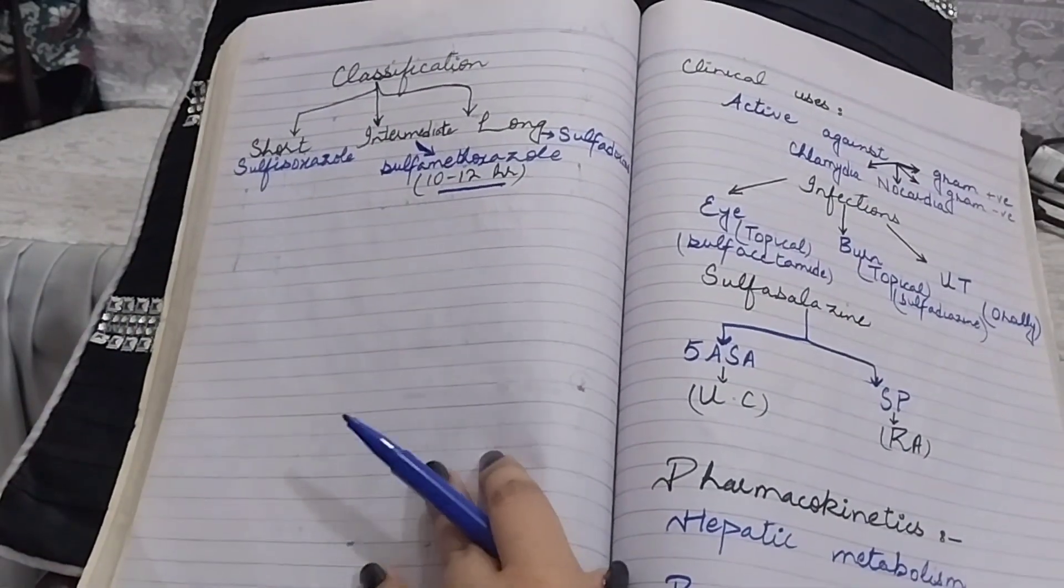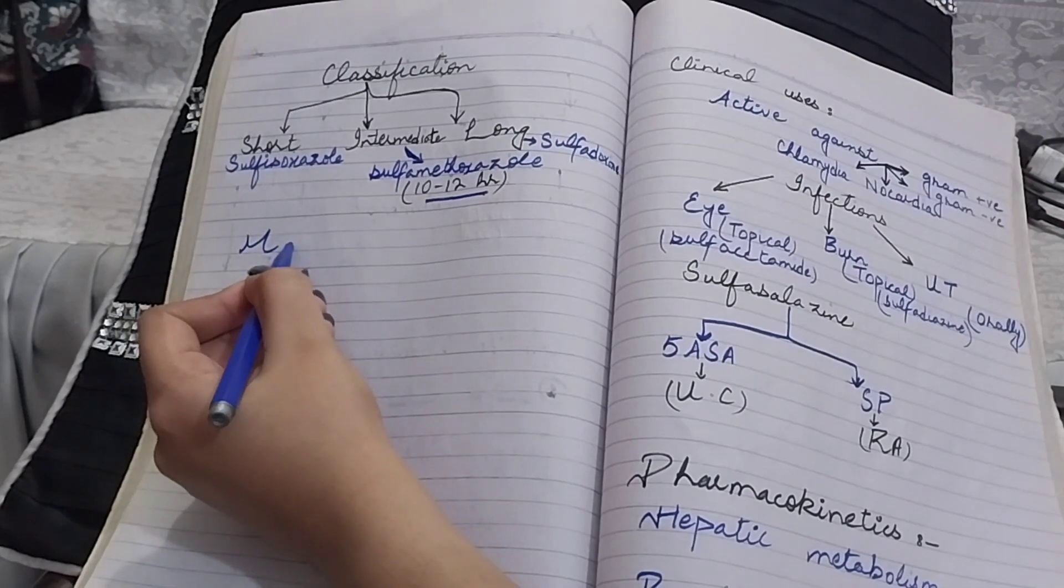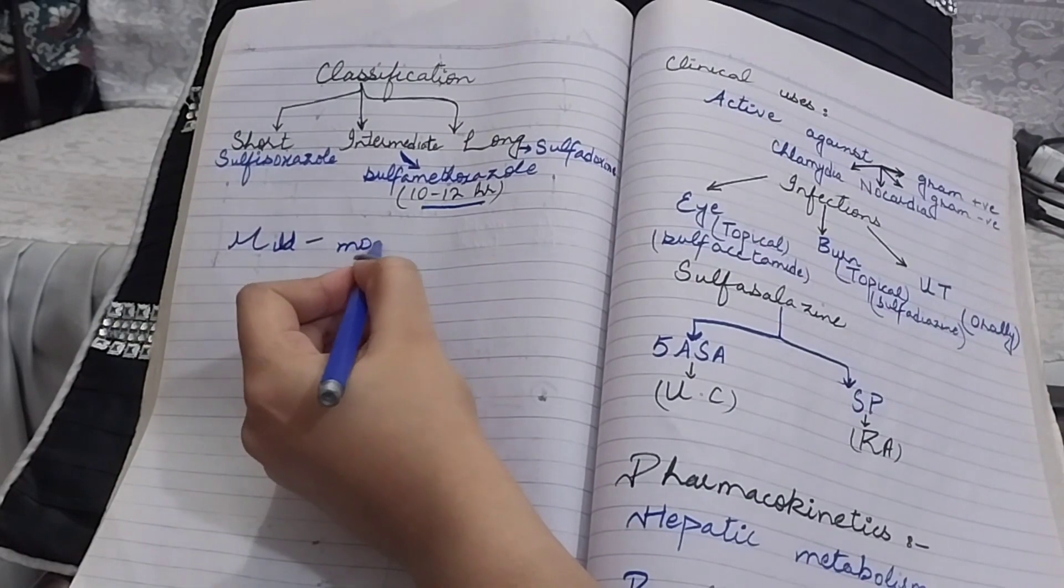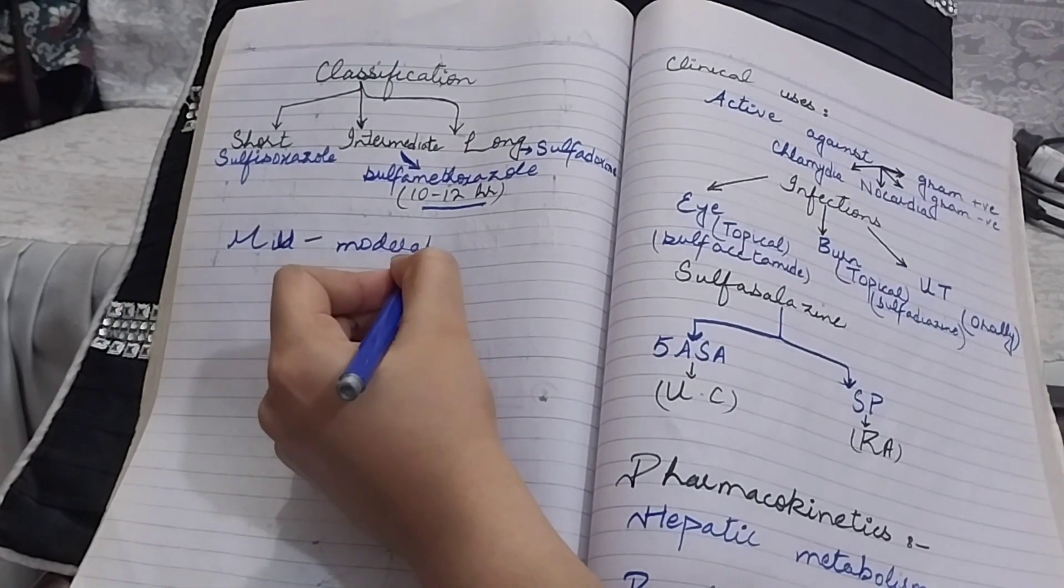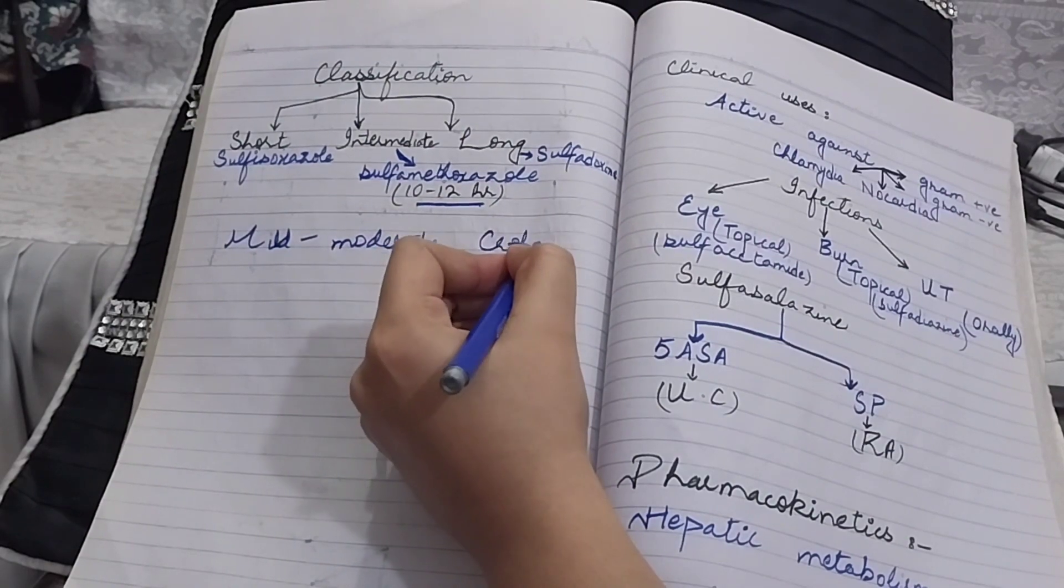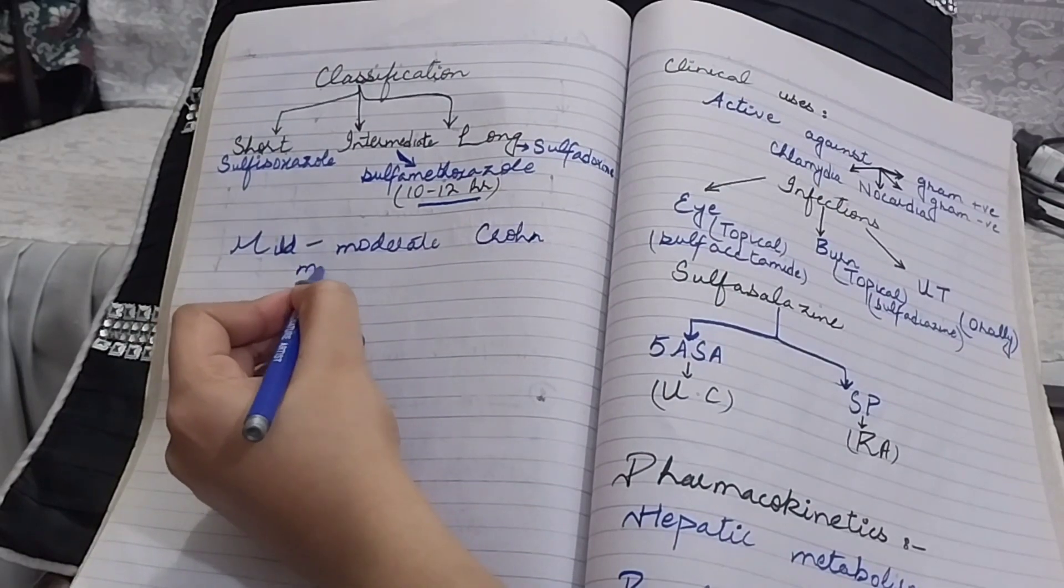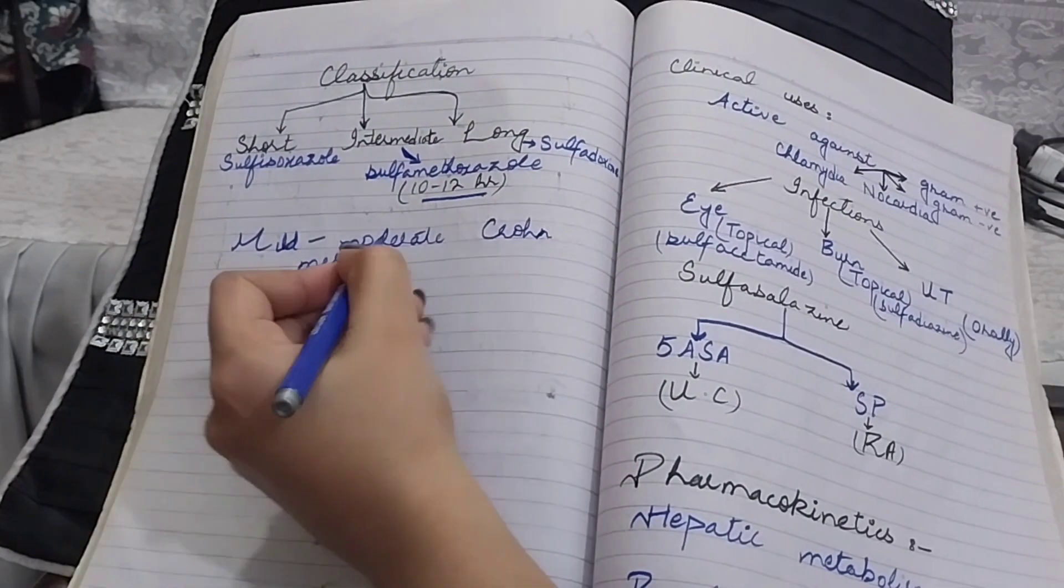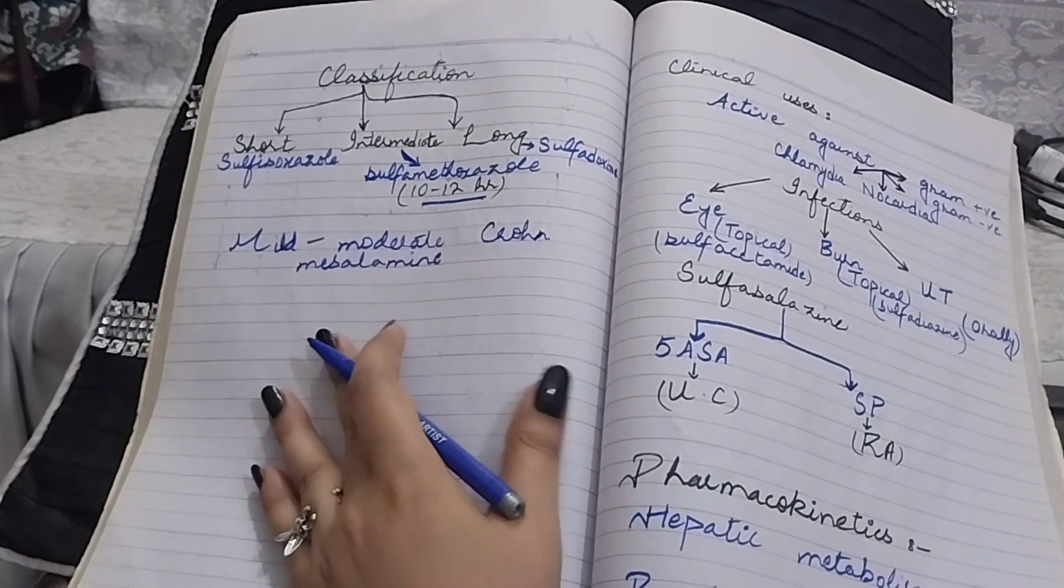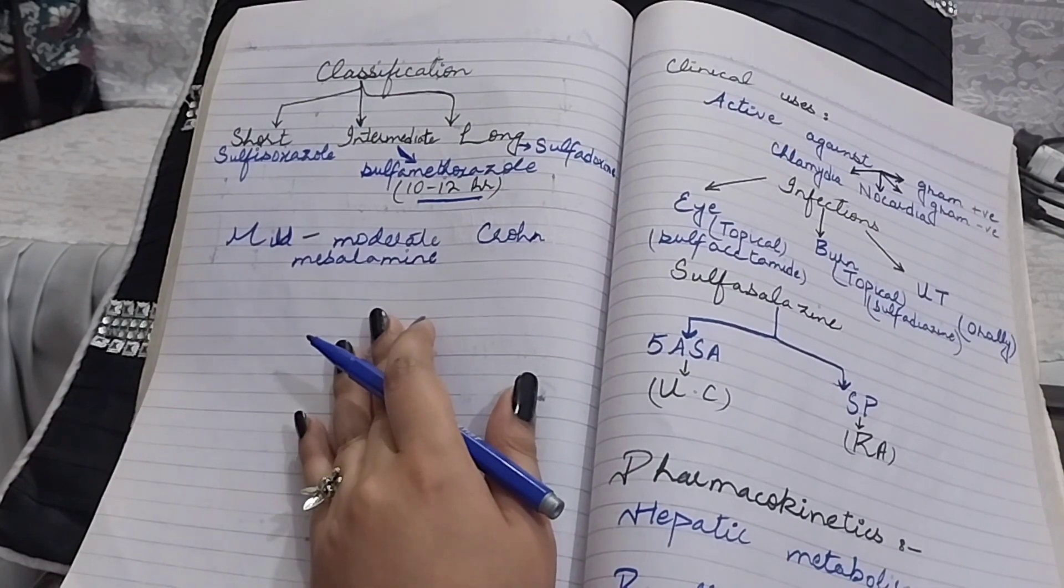Most cases of mild to moderate Crohn's are treated with 5-ASA, which is mesalamine. This mesalamine works throughout the gastrointestinal tract.